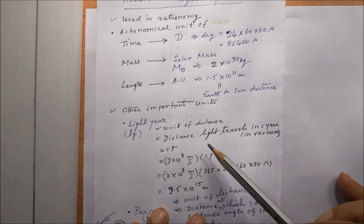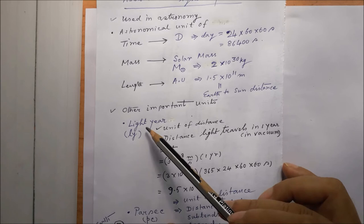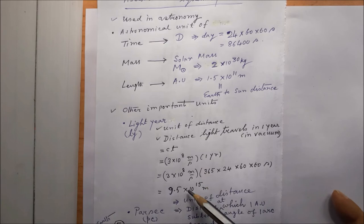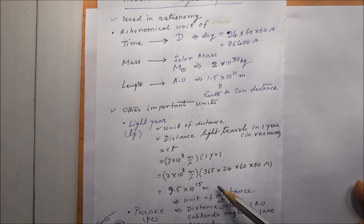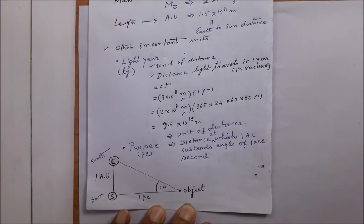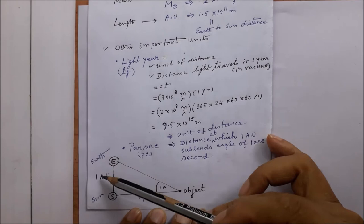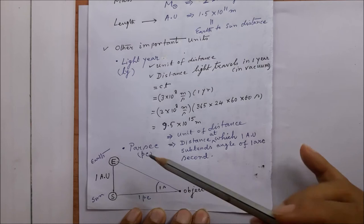Some other units are often used: the light year, denoted by ly, is a unit of distance — it is the distance that light travels in one year in vacuum, so it is c times t. Since one year is involved, multiplying gives 9.5 times 10 raised to the power 15 meters in SI. Another popular unit is the parsec, denoted by pc — parsec is a unit of distance.